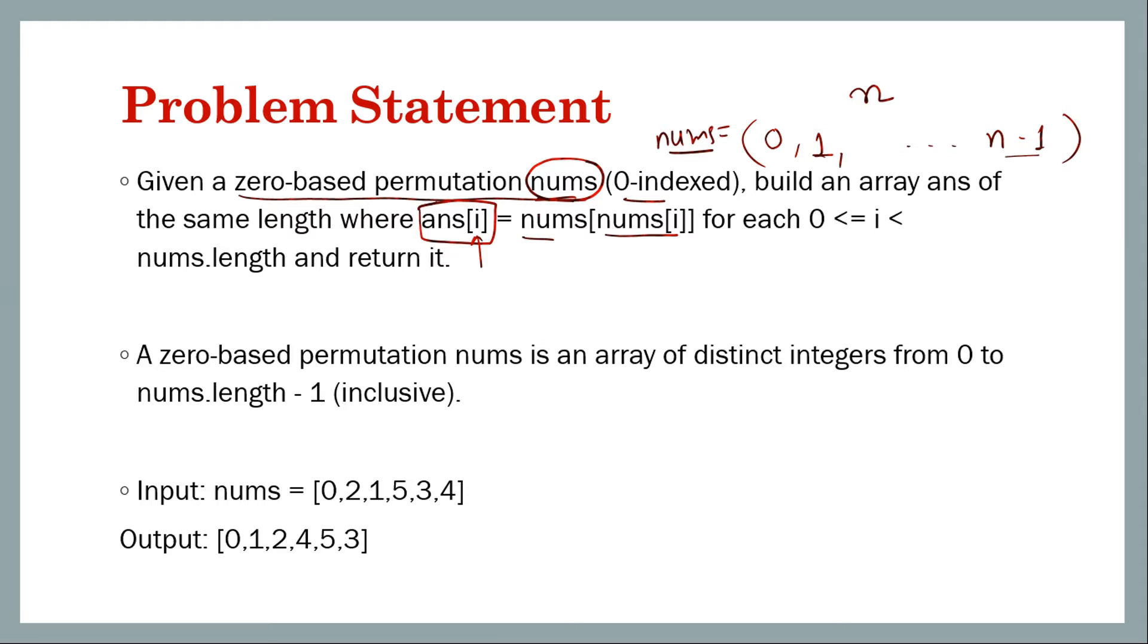Remember that nums only contains numbers from zero to n minus one, so nums[i] is a valid index within nums. You have to take nums[i] as the index and see what is the value at that index in nums.